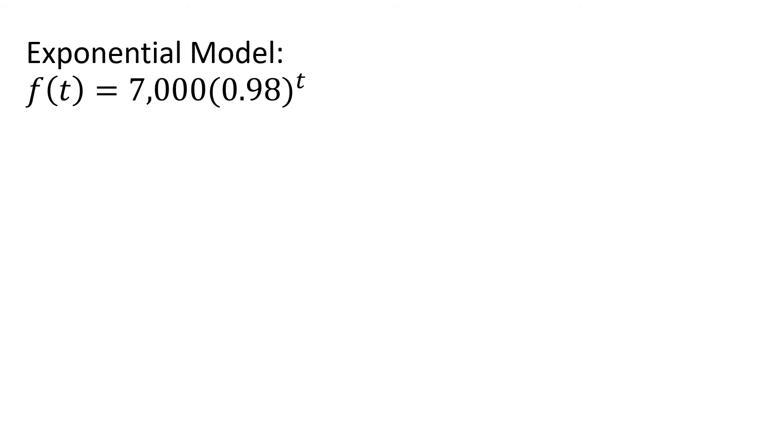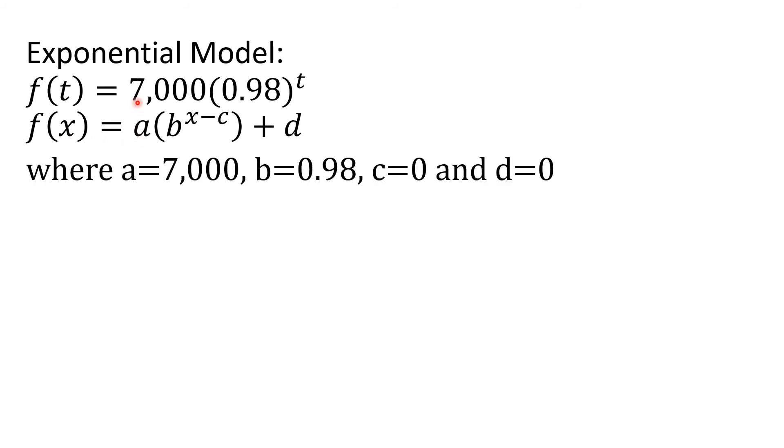The exponential model in the problem, which is F of T equals 7,000 times 0.98 to the T power, follows the transformation of the exponential function F of X equals B to the X. The transformation is F of X equals A times B to the X minus C plus D. In the exponential model, A is equal to 7,000, B is equal to 0.98, C is equal to 0, and D is also equal to 0.